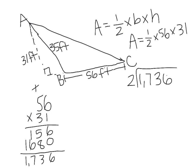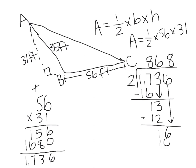17 divided by 2 is equal to 8, 8 times 2 is 16, 17 minus 16 is 1, bring down the 3, 13 divided by 2 is 6, 6 times 2 is 12, 13 minus 12 is 1, bring down the 6, 16 divided by 2 is 8, 8 times 2 is 16, 16 minus 16 is 0. So our answer would be 868 feet squared.